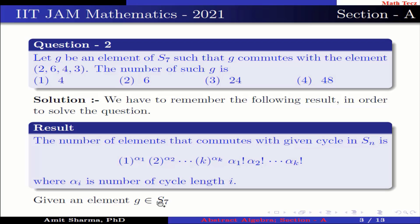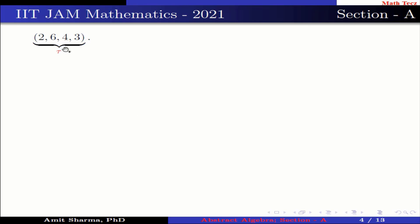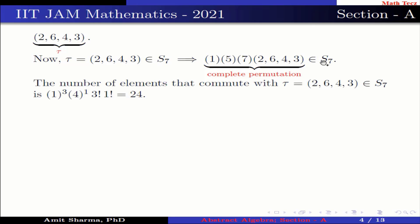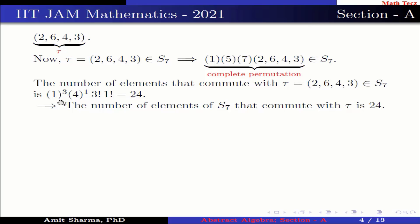Given an element g belonging to S7 that commutes with the element (2 6 4 3), let it be represented by tau. Tau is a permutation (2 6 4 3) in S7, which contains 7 elements. The number of elements that commute with tau is 1^3 · 4^1 · 3! · 1! = 24, since cycle length 1 appears 3 times and cycle length 4 appears 1 time. This implies the number of elements of S7 that commute with tau is 24. Hence option 3 is correct.